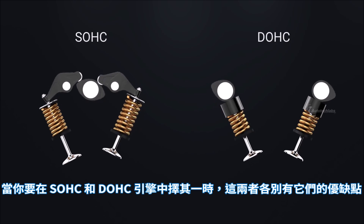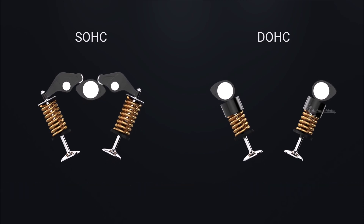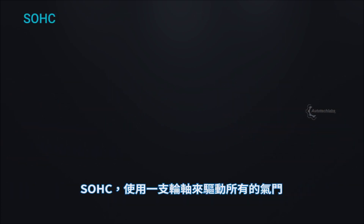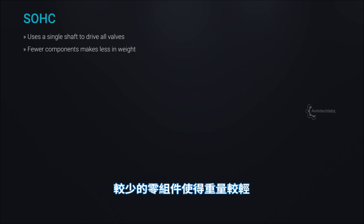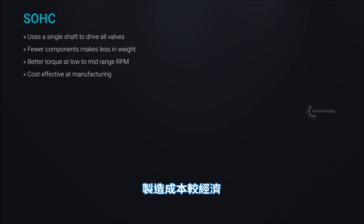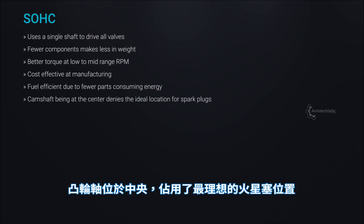When choosing between SOHC and DOHC engines, both have their own pros and cons. SOHC uses a single shaft to drive all valves. Fewer components make it lighter in weight, and it delivers better torque at low to mid-range RPM. It is cost effective at manufacturing and fuel efficient due to fewer parts consuming energy. However, the camshaft being at the center denies the ideal location for spark plugs.